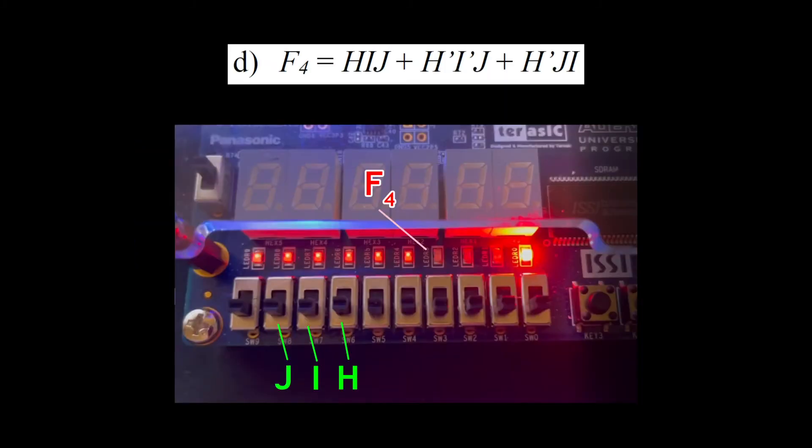For F4, switch 6 represents input H, switch 7 represents input I, switch 8 represents input J, and LED R3 represents output F4.